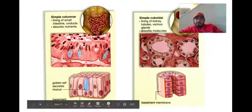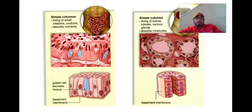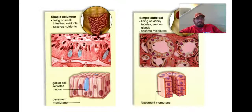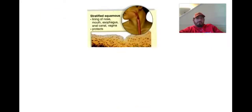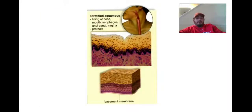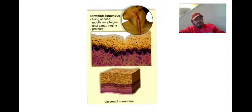Simple columnar is going to be for absorption, like in our small intestine. Simple cuboidal is found in our kidneys — you can see how they make these nice rings to absorb molecules. And then stratified squamous — many-layered squamous — found in the nose, mouth, basically the openings of our bodies. Lots of protection, lots of cells.